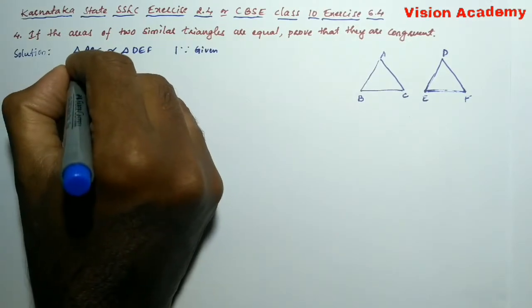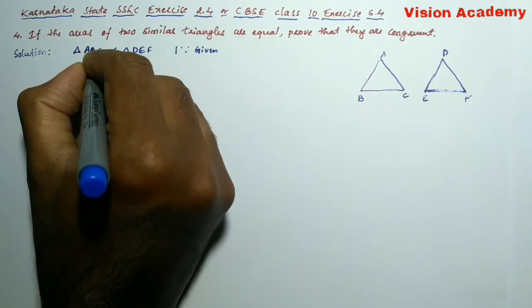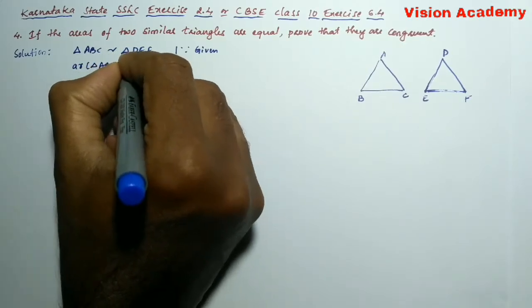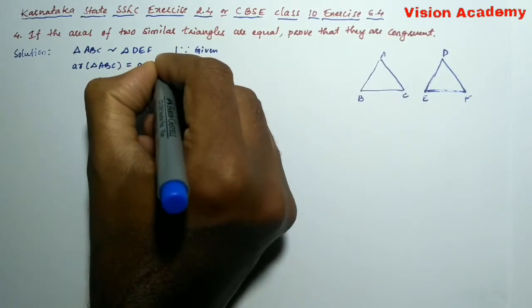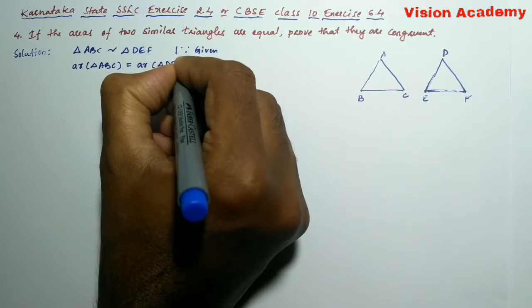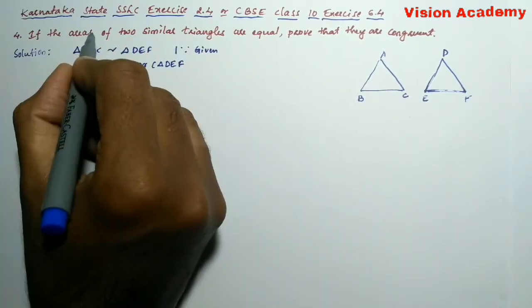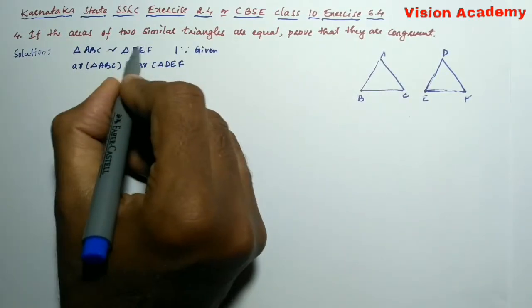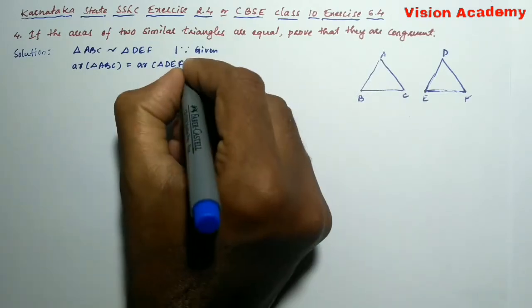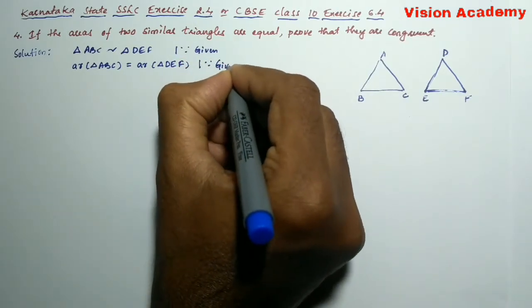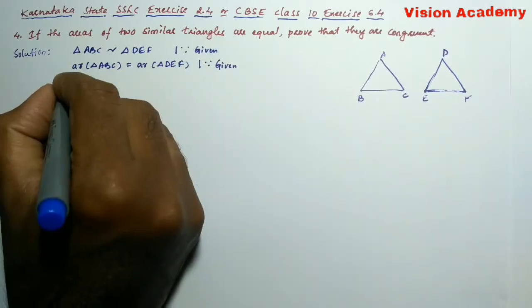And one more point they have given is area of triangle ABC is equal to area of triangle DEF. If the areas of two similar triangles are equal, this is also given. Therefore,